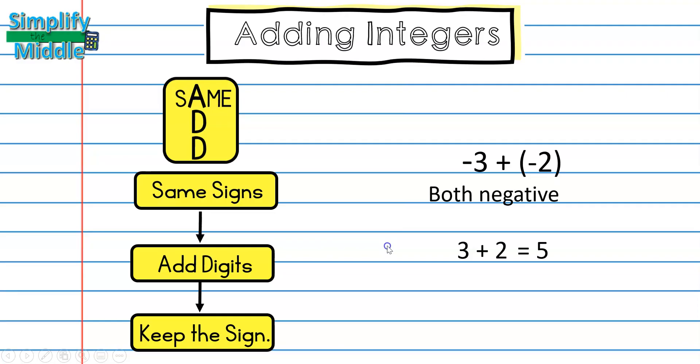And then we are going to be keeping the sign. So, here, because the sign is negative, the answer will be negative. So, negative 3 plus negative 2 is equal to negative 5.